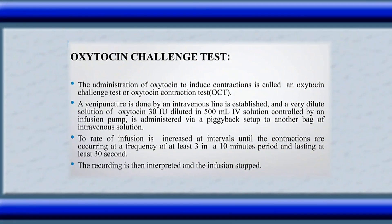The next method is the oxytocin challenge test. The administration of oxytocin to induce contractions is called an oxytocin challenge test or oxytocin contraction test. A venepuncture is done, an intravenous line is established, and a very dilute solution of oxytocin — 30 international units diluted in 500 ml of IV solution — is controlled by an infusion pump. The rate of infusion is increased at intervals until contractions are occurring at a frequency of at least 3 in a 10-minute period, lasting at least 30 seconds.